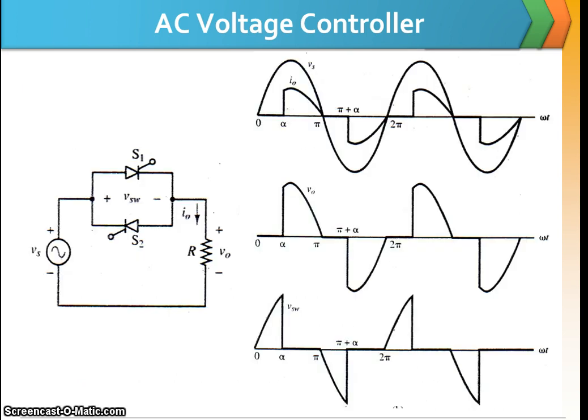So if we look in this single phase AC to AC control, we can determine that the output voltage has been slightly cut off by alpha plus pi.